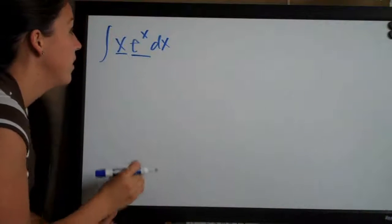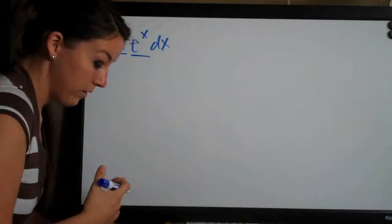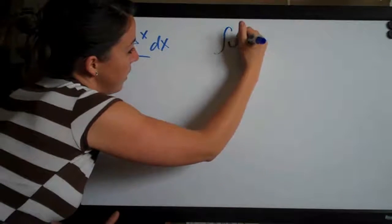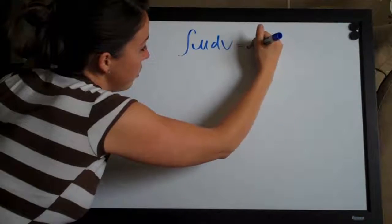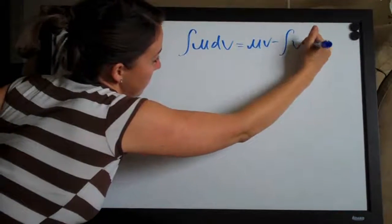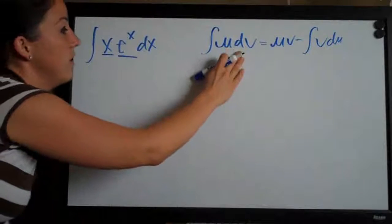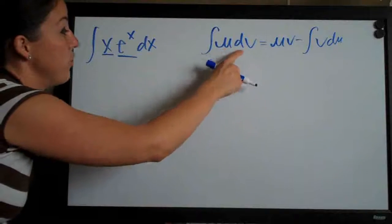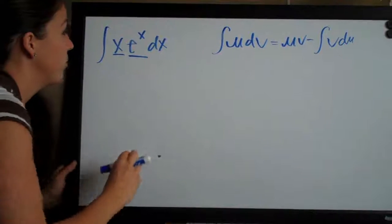So let's try integration by parts. Remember, the integration by parts equation is: the integral of u times dv equals uv minus the integral of v du. This is the equation we're working with, and we need to assign u and dv to identities in our integral.